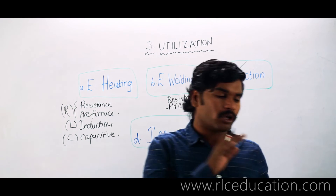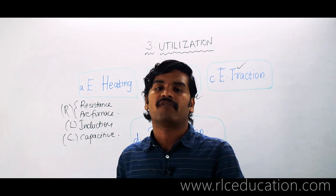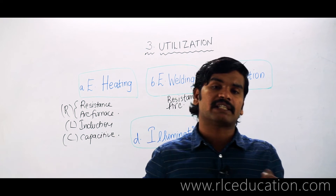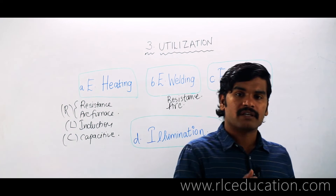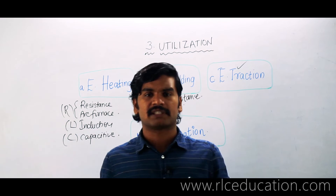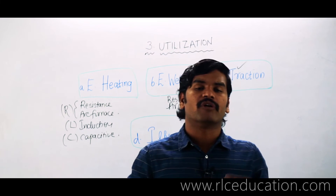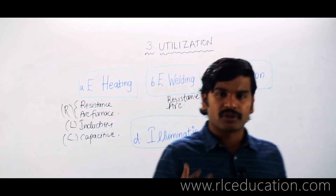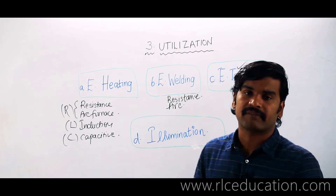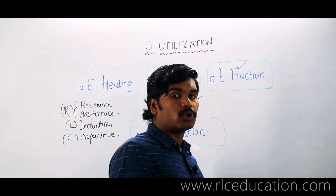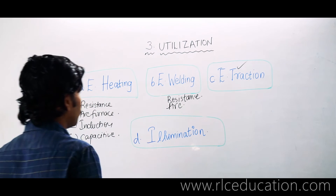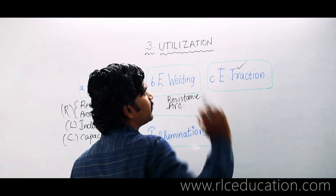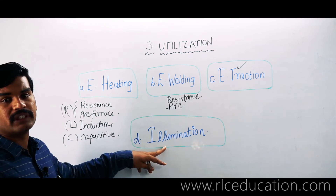In order to run an electric train, we will study the different configurations of the train, the different types of supply systems available, power collection gear, and traction mechanics — meaning the force required to move a train for a given weight under different conditions. We will also cover specific energy consumption, question of adhesion, schedule speed, average speed, maximum speed, and speed-time curves. Electric traction is one of the most important topics in utilization of electrical energy.